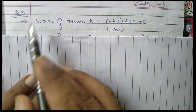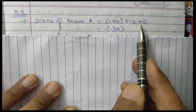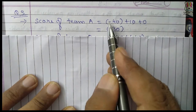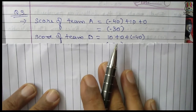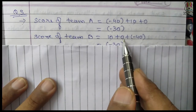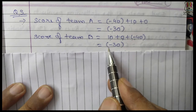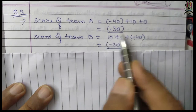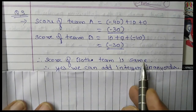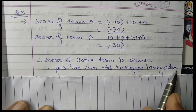Solution for question 3: the score of team A is minus 40 plus 10 plus 0. Minus 40 plus 10 is minus 30 because the negative sign is bigger. The score of team B is 10 plus 0 plus minus 40. So 10 plus 0 is 10, and 10 minus 40 is minus 30 because the negative sign is bigger. Both teams scored minus 30 — the scores are the same. Therefore, yes, we can add integers in any order.